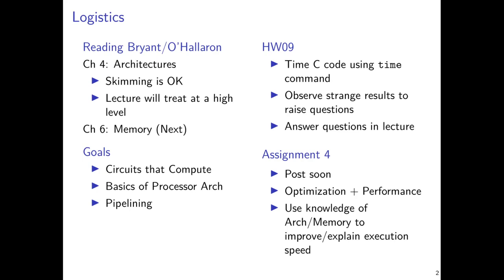That should give you some idea of the depth present in there and the many details they attend to, which are a bit beyond the scope of what I think is important for practicing computer scientists. Do have a look though, because we'll touch on aspects they discuss. The next chapter you want to start looking at in more detail is chapter six on the memory system, and we'll spend considerable time there as well.